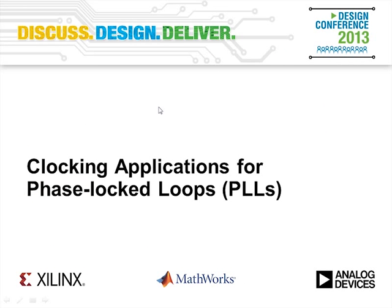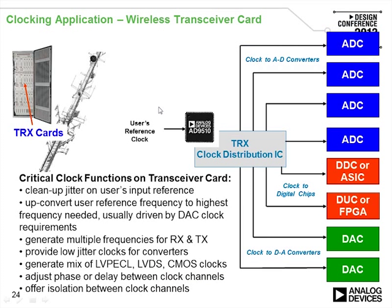Looking at clocking applications for phase locked loops — a wireless transceiver card can have several channels of A-to-D conversion, a digital down converter or ASIC, a digital up converter or FPGA, and D-to-A converters, all of which need clocks. Those clocks can be provided by the clock distribution and generation chips from ADI.